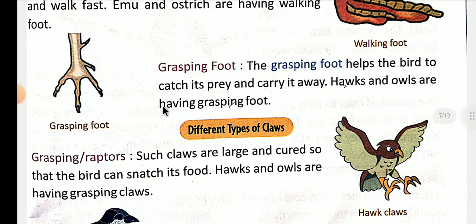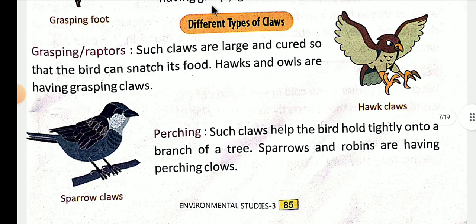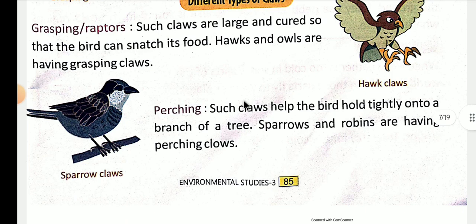Next topic: different types of claws. Alag alag tarah ke jo claws hote hain unke baare mein padhte hain — abhi tak humne pada tha feet ke baare mein, ab claws ke baare mein padhenge. Grasping claws in raptors such as hawks and owls are large and curved so that the bird can snatch its food. Is tarike ke jo claws hote hain wo pakshiyon ko unke food ko snatch karne mein help karte hain.